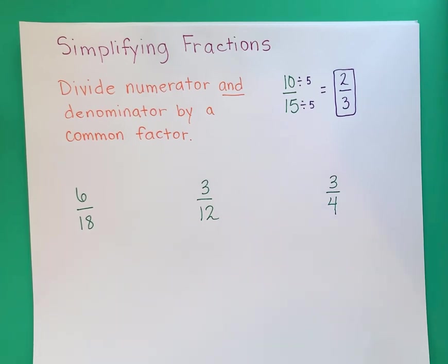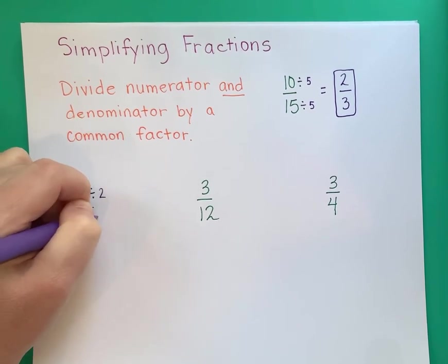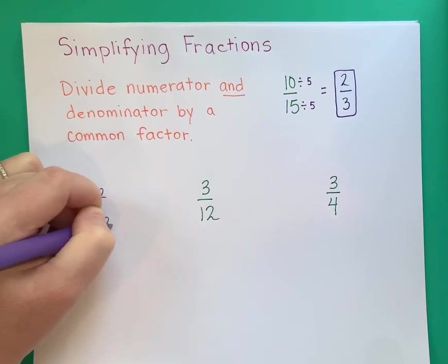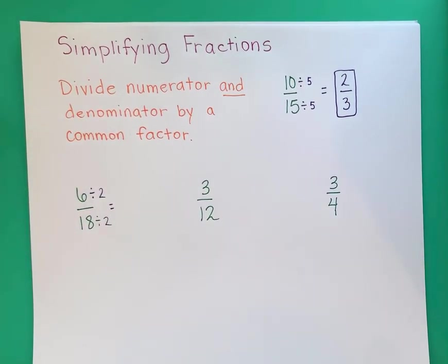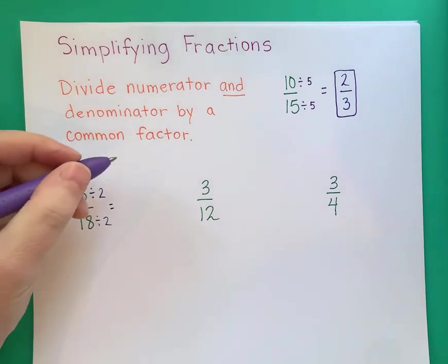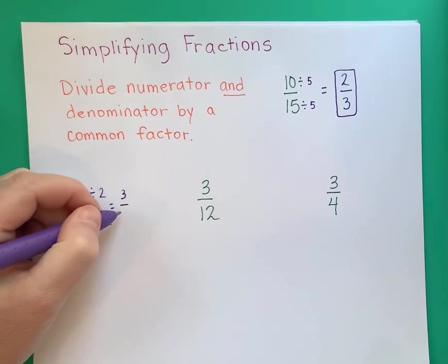Let's do a few more examples. 6 over 18. There are a few different things we could divide by, but one easy thing is that both of those are even numbers. Remember, anything that ends in 2, 4, 6, 8, or 0 is an even number. So I could start by dividing both of them by 2 — that's not our only option, just one way we could do this. When you divide by 2, you're just cutting it in half, so half of 6 is 3 and half of 18 is 9.